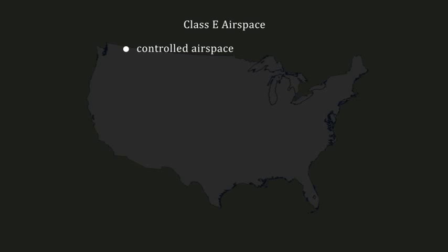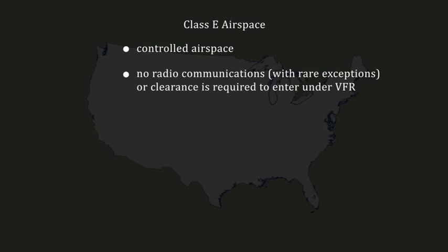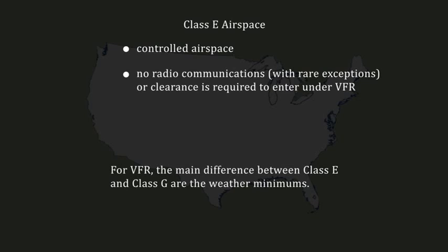Class E is controlled airspace. However, there is no requirement to call air traffic control or obtain a clearance to enter Class E under visual flight rules. For VFR flight, the main difference between Class E and Class G airspace are higher visibility and cloud clearance requirements. For this reason, Class E airspace is often referred to by VFR pilots as weather-controlled airspace.